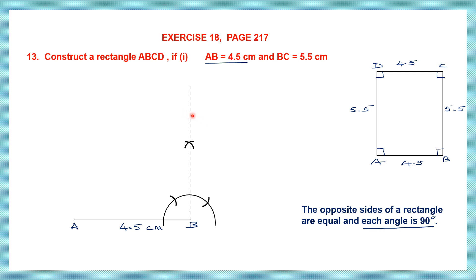Now that we have the 90 degree line we can construct BC 5.5 centimeters. Take your compass, measure 5.5 centimeters, place the needle at B and draw an arc on this 90 degree line. When you draw the arc you get the point here — this is 5.5 centimeters. So this point of intersection will be C and the measurement here is 5.5 centimeters. Draw a line from B to C — so we have a line drawn from B to C and that is 5.5 centimeters.